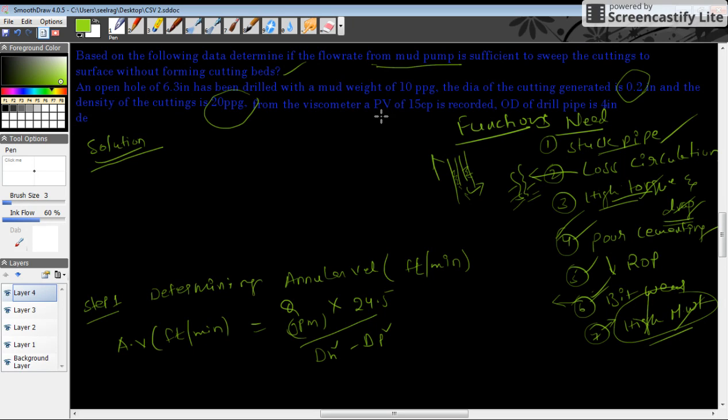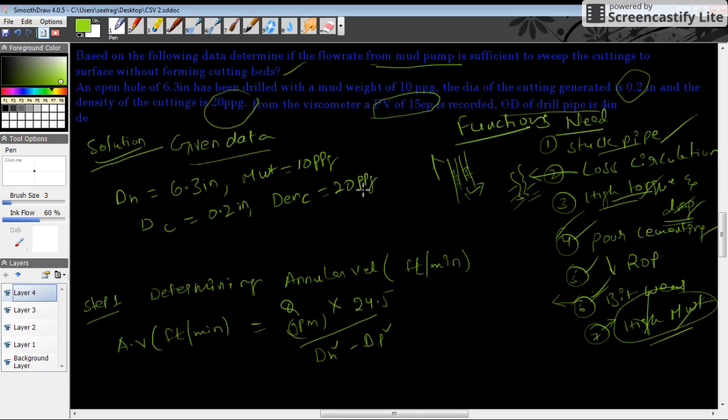From the Fann VG viscometer we have a plastic viscosity of 15 cp and OD of drill pipe is 4 inch. We'll just put down the given data. Open hole diameter DH is 6.3 inches, mud weight is 10 ppg, diameter of cuttings DC is 0.2 inches, density of cuttings is 20 ppg, and drill pipe OD is 4 inches.